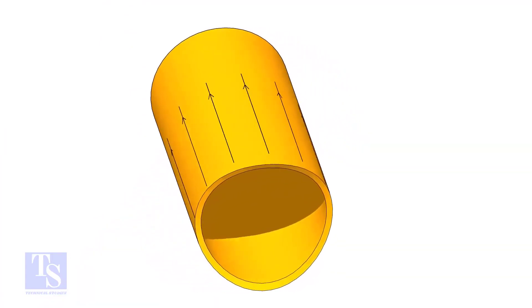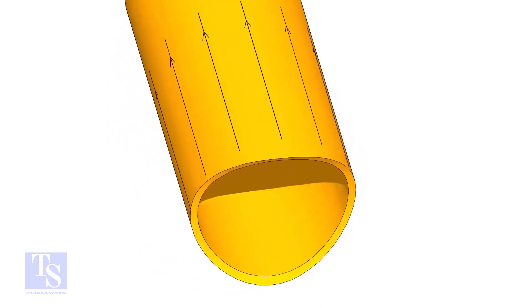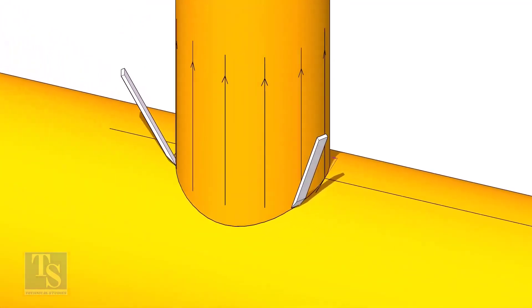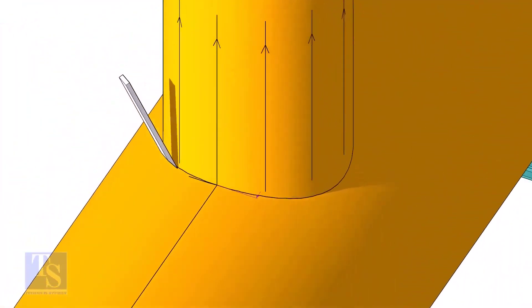After cutting and grinding the notch on the branch pipe, put it on the header. Make sure it is exactly in its position and mark the opening on the header as shown.